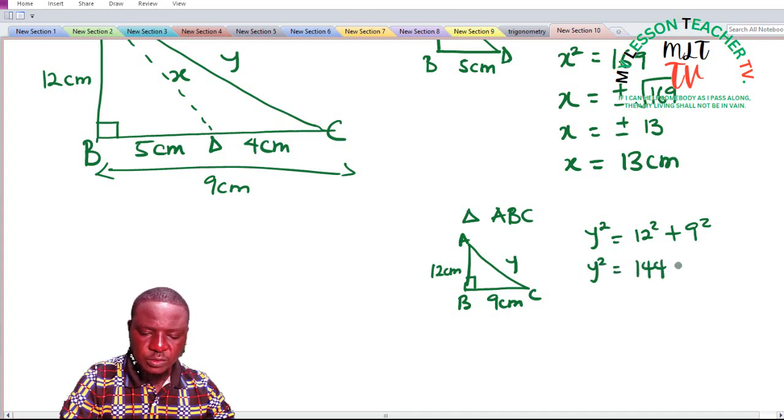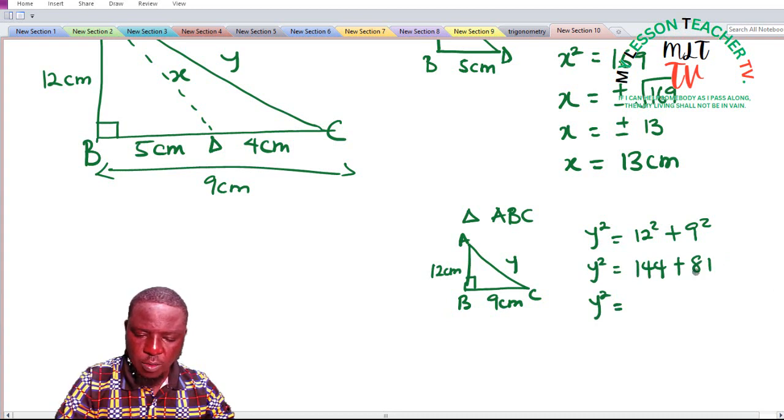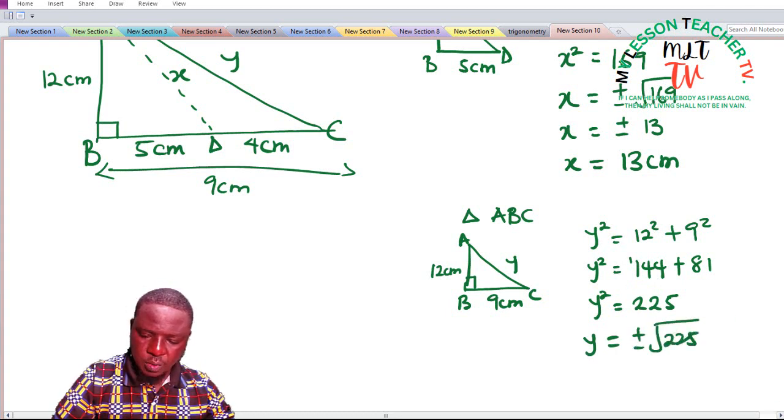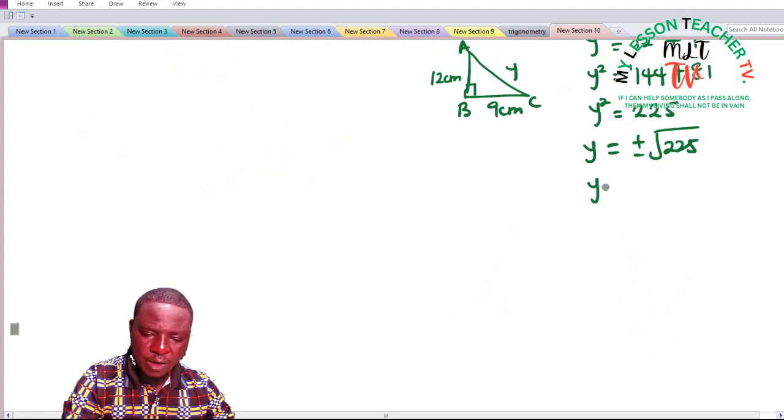So that y squared is equal to 144 plus 81. 4 plus 1 is 5, 4 plus 8 is 12, you write down 2 and carry 1. This gives us 225. So y is said to be plus or minus square root of 225.